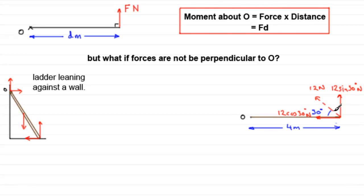So when it comes to working out the moment of the original 12 newton force about O, then the moment about O will be the perpendicular force, in this case 12 sine 30 degrees, and that is multiplied by the distance back to O, which is going to be 4 meters.